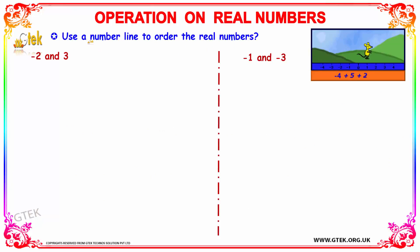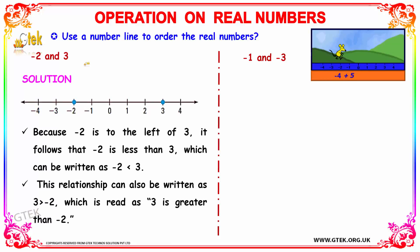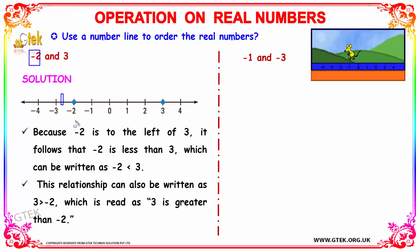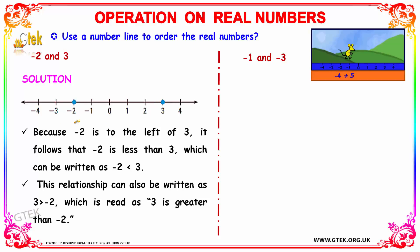Now let's see some examples. We need to use a number line to order the real numbers. For the first question, we have minus two and three. The number line goes from minus four to four. We have indicated minus two and three on the number line. Minus two is to the left of three, which means minus two is less than three, written as minus two < three.